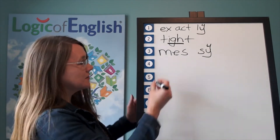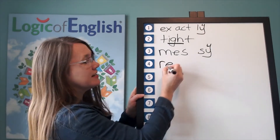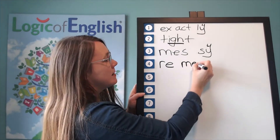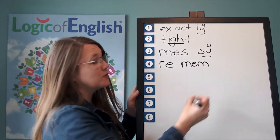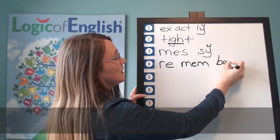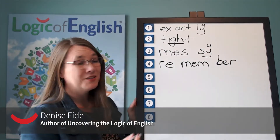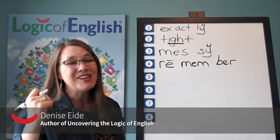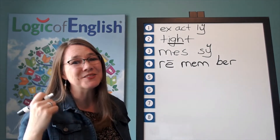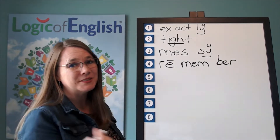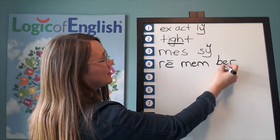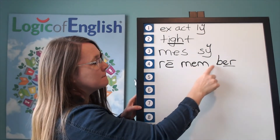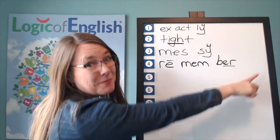Excellent. Now help me to write it. The first syllable is re. Er-ee. The second syllable is mem. The third syllable is bur. Buh, ur. And how will we mark it? We'll put a line over the E. Why? A, E, O, U usually say their long sounds at the end of the syllable. We'll underline the UR. Let's sound it out. Er-ee. M-ah-mm. Buh, ur. Remember.